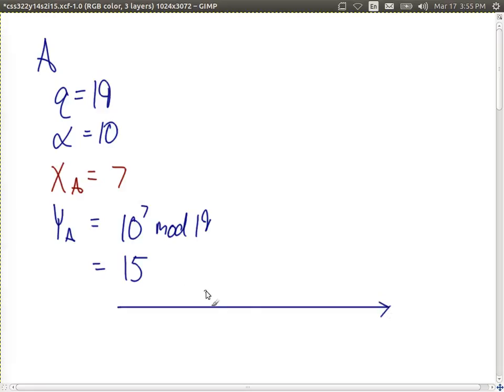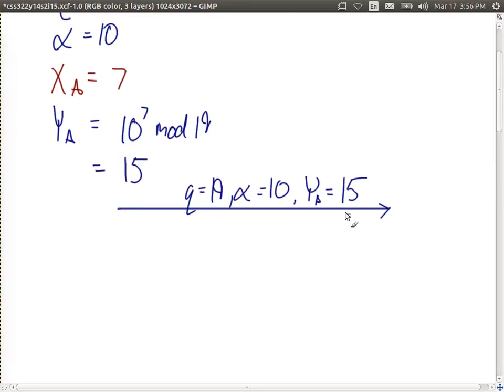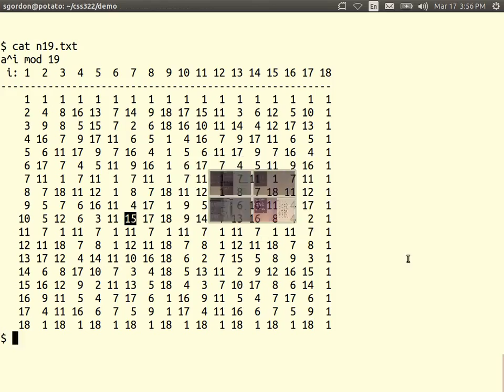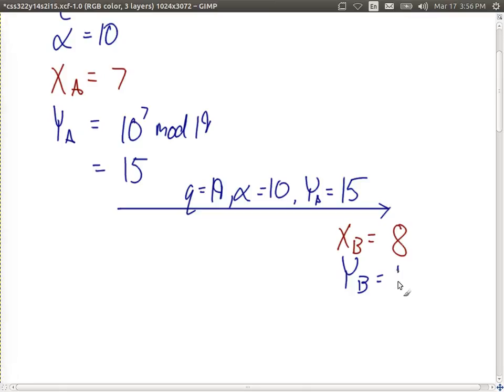Send them to B. Q, Alpha, and YA. Don't tell anyone else your private key. The idea is that we can send this message across a network. And even if someone intercepts it, they shouldn't be able to find the private values. Here we choose a value of X. Someone choose a value. 8. Calculate a value of Y, which will be 10 to the power of 8 mod 19. 10 to the power of 8 mod 19 is 17. And send it back.